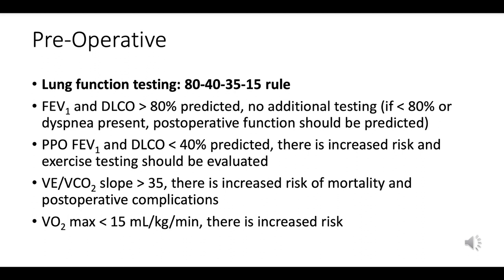The 35 rule: VE to VCO2 slope represents the relationship between carbon dioxide produced and volume of air ventilated. A slope greater than 35 indicates inefficient ventilation relative to metabolic demand, and is associated with increased risk of mortality and postoperative complications.